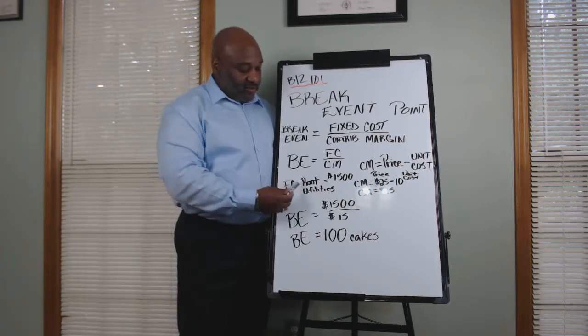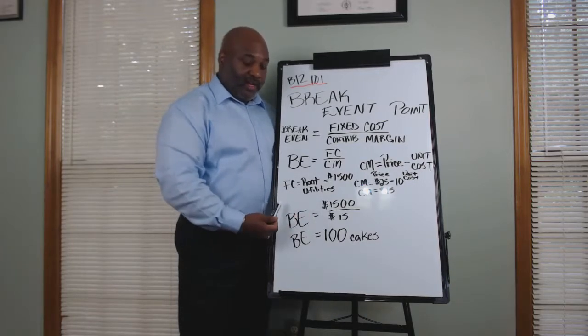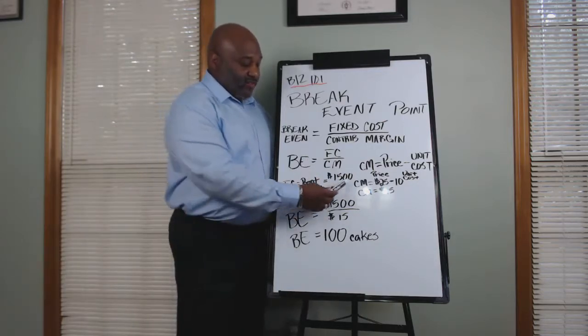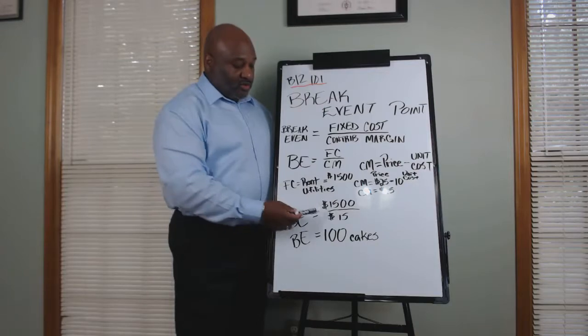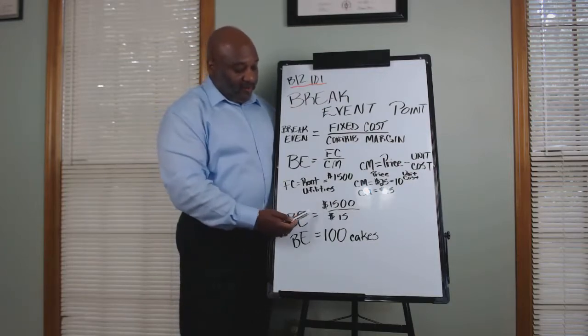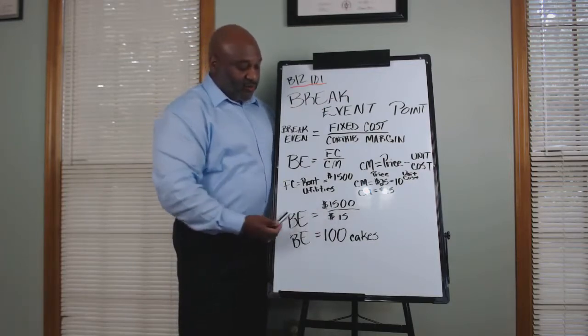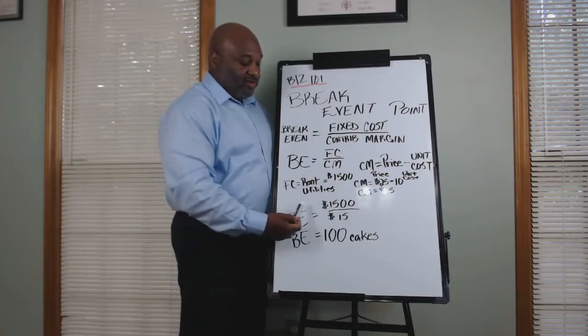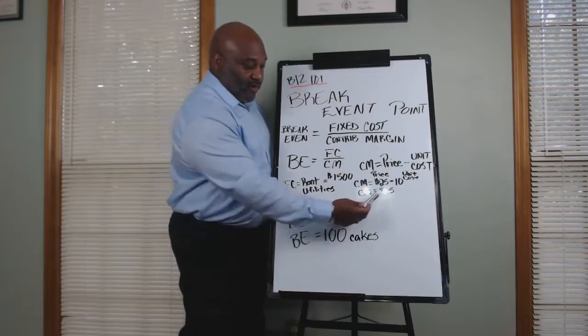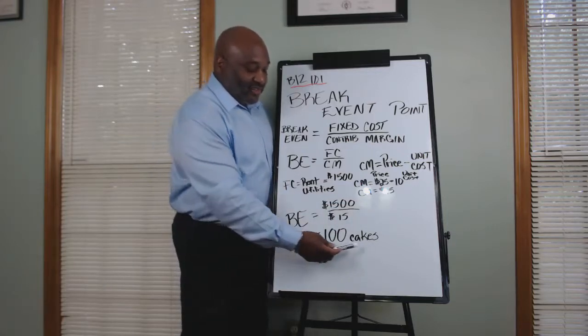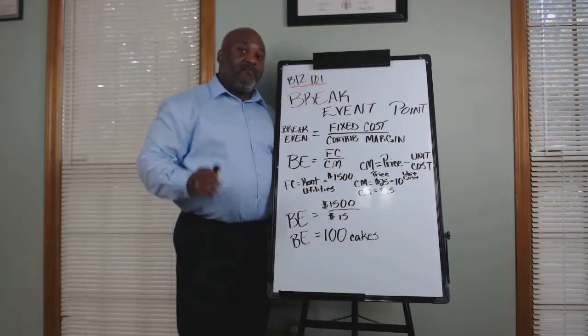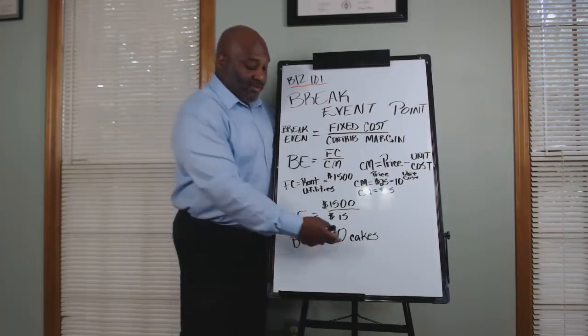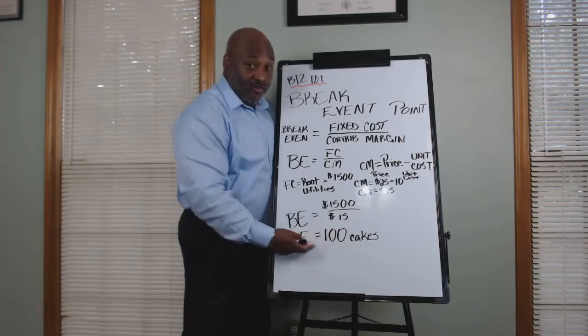So we look back at our definition for the break-even analysis. We know our fixed cost for the rent, utilities, payroll, insurance is $1,500. To start that formula up, we divide the contribution margin into those fixed costs, where $1,500 divided by 15, remember that 15 is the contribution margin, and it gives us 100 units or 100 cakes. So what does that tell us again? For us to break even each month, we have to sell 100 cakes.